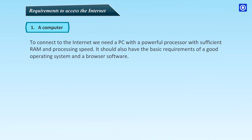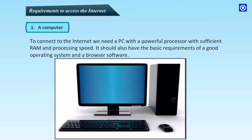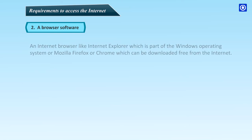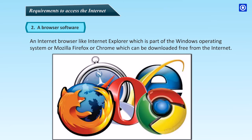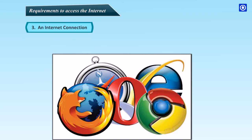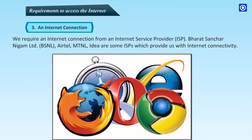Requirements to access the Internet. A computer: To connect to the Internet, we need a PC with a powerful processor with sufficient RAM and processing speed. It should also have the basic requirements of a good operating system and a browser software. A browser software: An Internet browser like Internet Explorer, which is part of the Windows operating system, or Mozilla Firefox or Chrome, which can be downloaded free from the Internet. An Internet connection: We require an Internet connection from an Internet Service Provider, ISP.